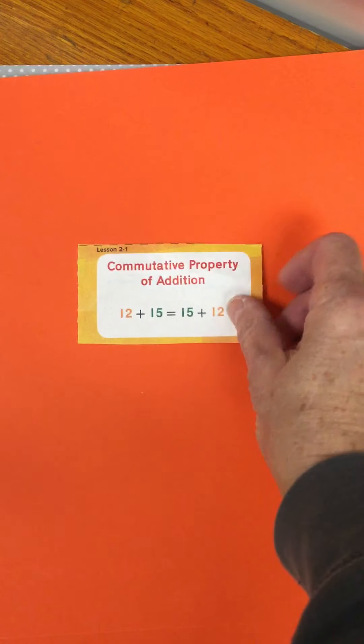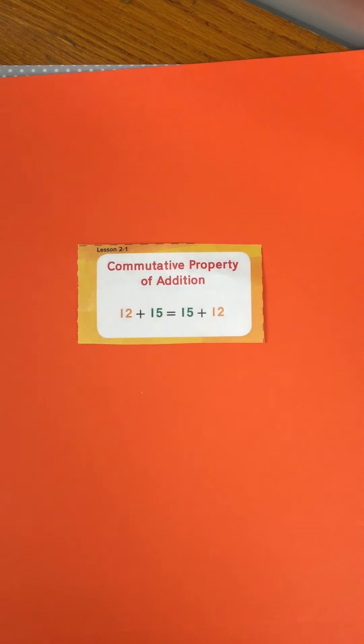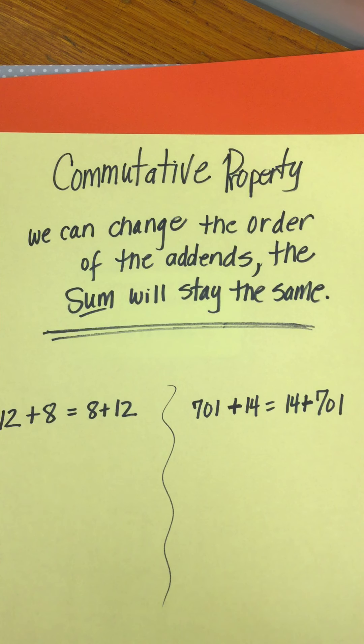The next one that I want to share with you is commutative property. And remember commutative property tells us that we can change the order of the addends but we will still get the same sum. So let's work through one of these together. I put at the top, we can change the order of the addends but the sum, the total, will stay the same.